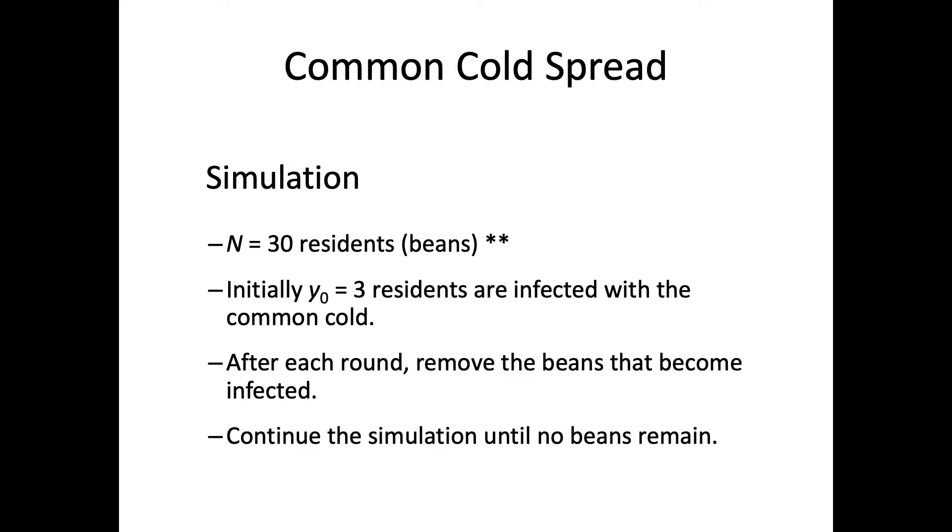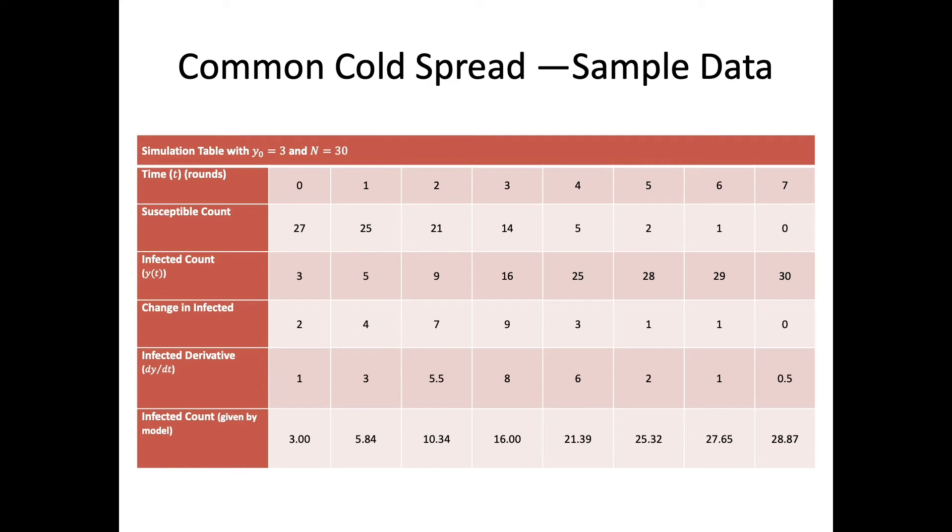Thirty residents represented by beans come back to a college campus where initially three residents were infected, and there's the model of a dormitory floor. We figure out a way that the students will get infected by the common cold, and we continue the simulation until no beans remain.